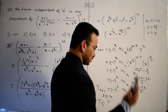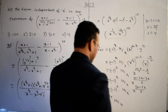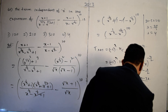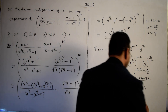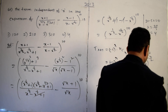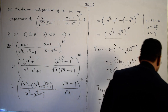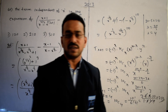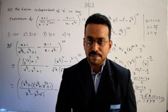Putting r = 4: T5 = (-1)^4 · 10C4 · x⁰ = 10C4 = 10! / (6! · 4!) = (7 × 8 × 9 × 10) / (1 × 2 × 3 × 4). Simplifying: 8 cancels with 2×4, and 9 cancels with 3, leaving 7 × 3 × 10 = 210. The final answer is 210.